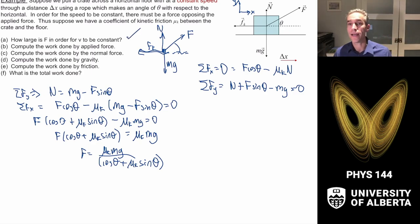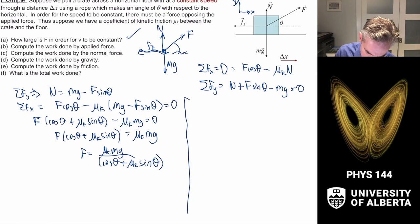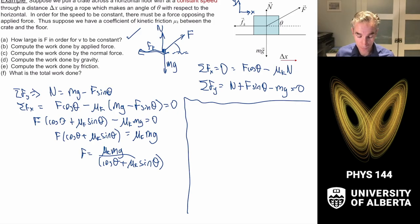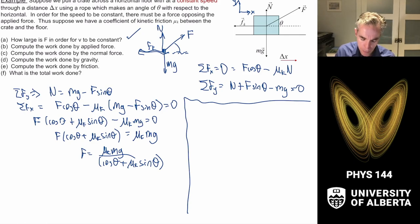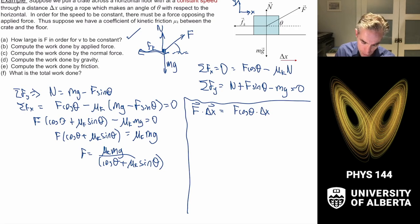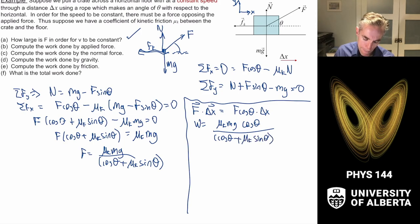Now I want to calculate the work done by the applied force. The applied force has magnitude F, but only the horizontal component contributes to the work along the displacement Δx. So the work is W = F⃗ · Δx⃗ = F cosθ · Δx, which gives W = μ_k mg cosθ · Δx / (cosθ + μ_k sinθ).